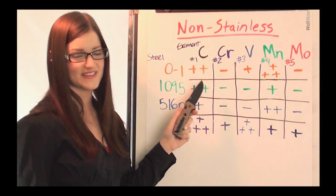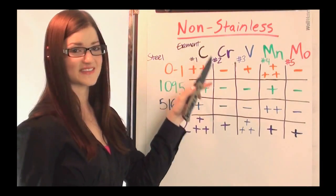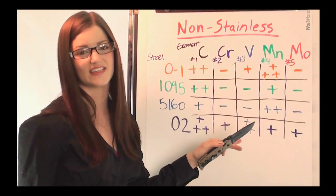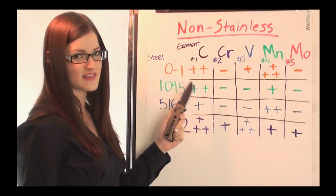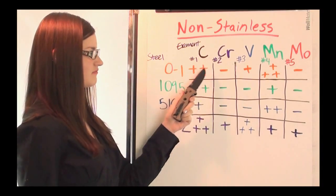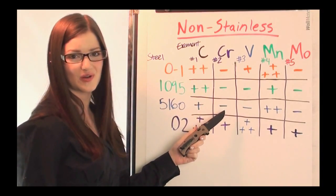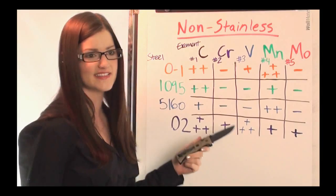Right off the bat you can see these symbols are going to relate differently to those stainless steels. Some of these steels don't even have - these steels have negligible amounts of chromium. That's why they're considered non-stainless.